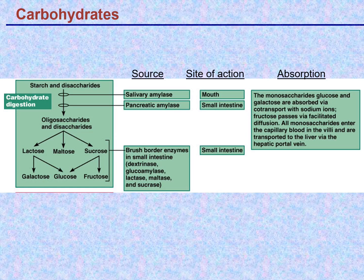There are several brush border enzymes that act on carbohydrates, including lactase, maltase, and sucrase, which act on lactose, maltose, and sucrose respectively — all disaccharides. Maltose is made of two glucose units. These enzymes break the disaccharides down into their component monosaccharides.